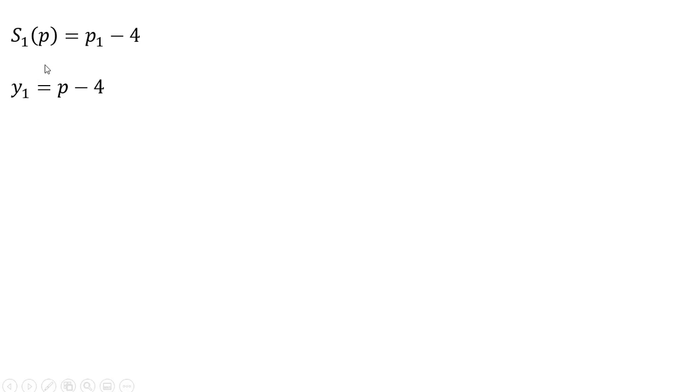So just rewriting here, Firm 1's supply, replacing the left-hand side with Firm 1's quantity supplied, calling that y subscript 1. And if we solve that for p, we have Firm 1's inverse supply.